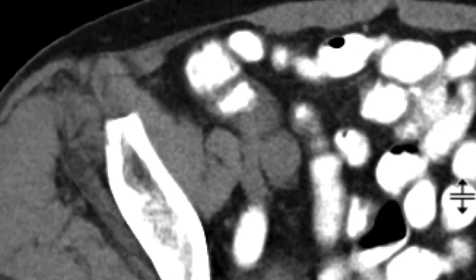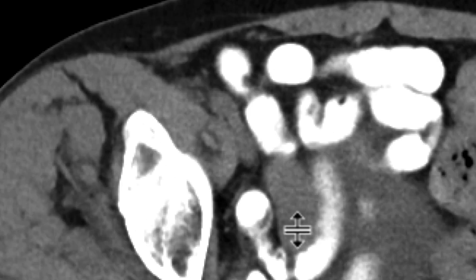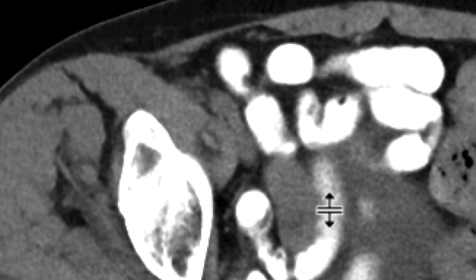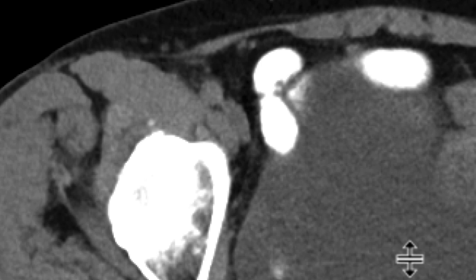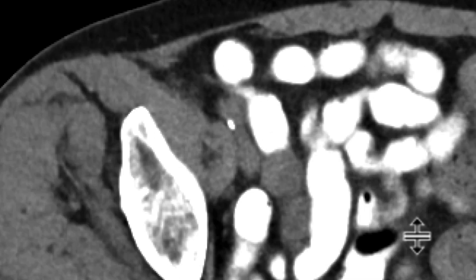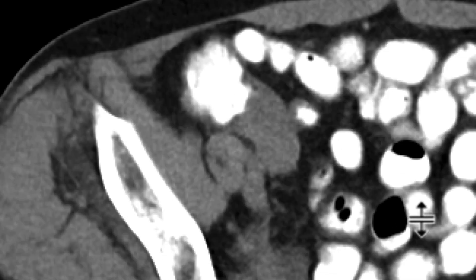We can follow it down. It's right over there, and we can see it all the way down — quite tubular and blind-ending. We can see that it's separate from loops of small bowel, which have oral contrast in them, and so we have this blind-ending tubular structure coming off the cecum.